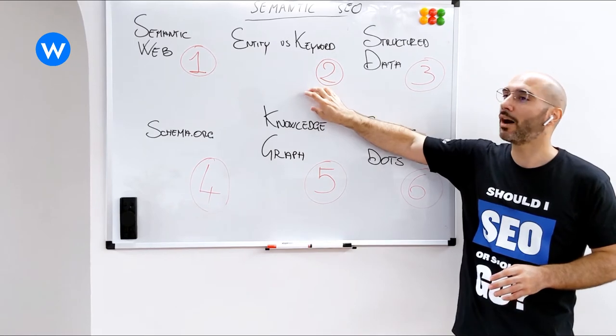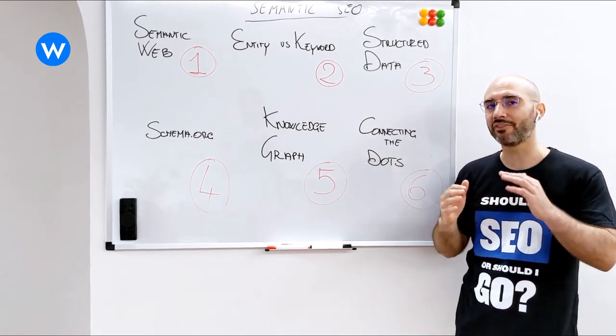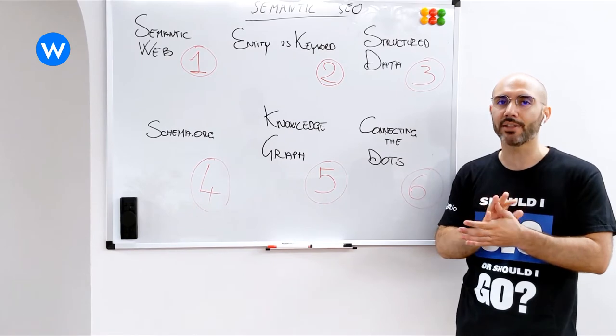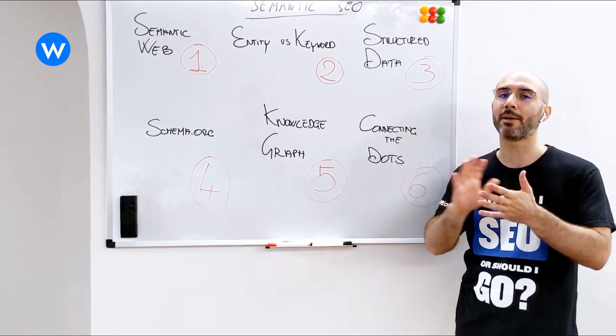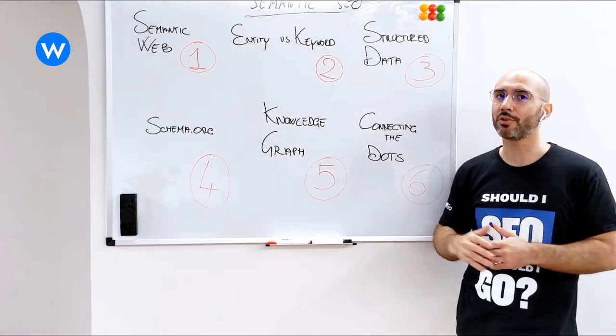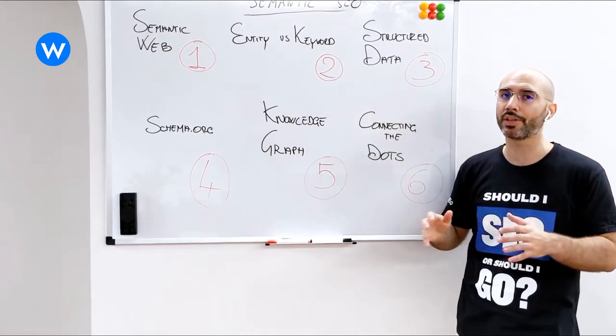In second instance, we saw how entities are actually way more effective than keywords because with an entity we're giving context and understanding in a machine friendly and machine readable format so that search engines like Google can read and understand our content right away.